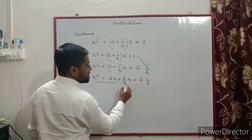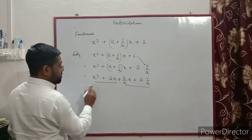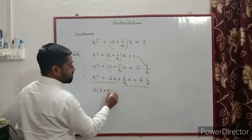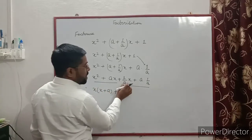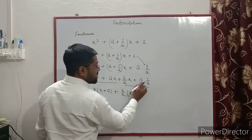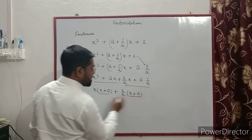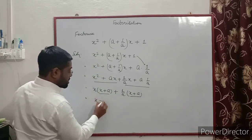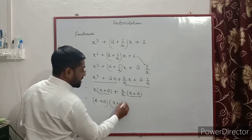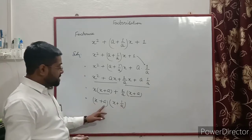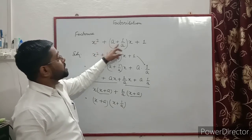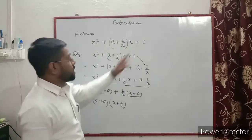This is the first group and this is the second group. From the first group take out x, so x(x + a). From the second group 1/a will be common, so (1/a)(x + a). Now (x + a) will be common, take it out: (x + a)(x + 1/a). So (x + a) and (x + 1/a) are the factors of x² + (a + 1/a)x + 1. That is the answer.